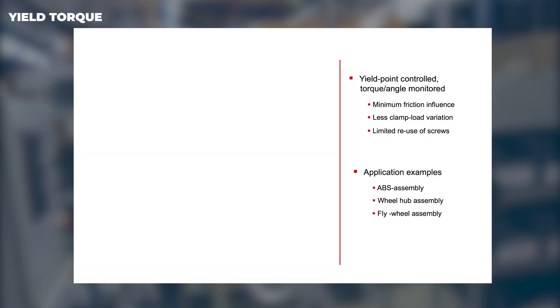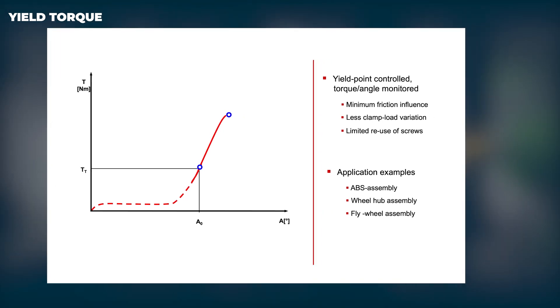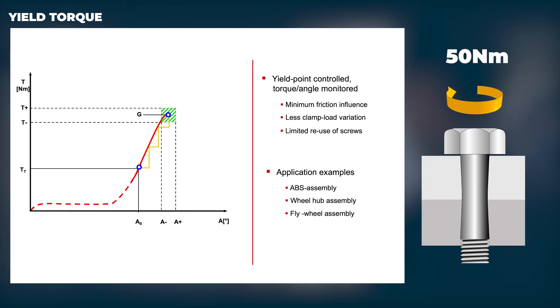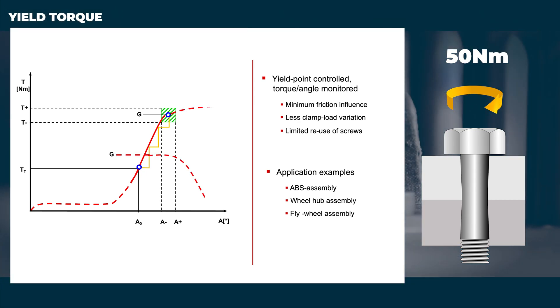Yield point bolting is a very specialized strategy where bolts are specifically designed to stretch once the desired clamp load is achieved. This bolting strategy is often used with cylinder head tightening as an example.